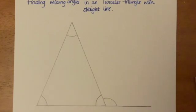This video is very similar to my one on finding missing angles in a scalene triangle with a straight line, except obviously it's with an isosceles triangle. So we're going to use the same method that we did for that one.